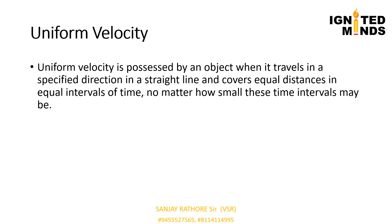Now we discuss uniform velocity, that is constant velocity. Suppose a car moves along the east direction over a horizontal road and covers 30 km in each hour. Then the velocity of this car is uniform or constant velocity.